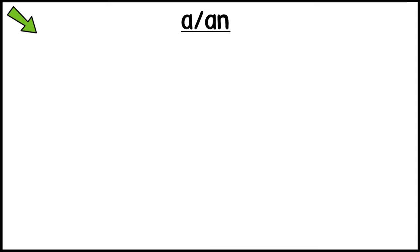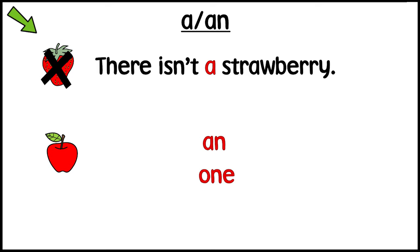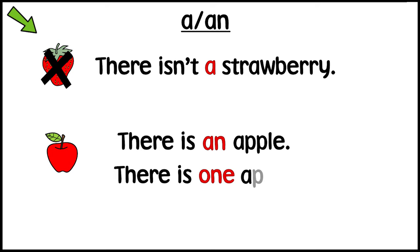With singular countable nouns we use a or an or a number. There isn't a strawberry. There is an apple. There is one apple.